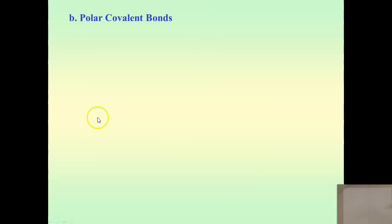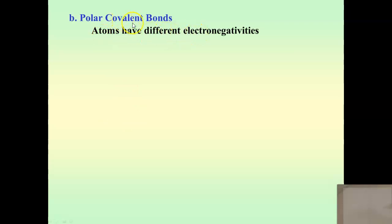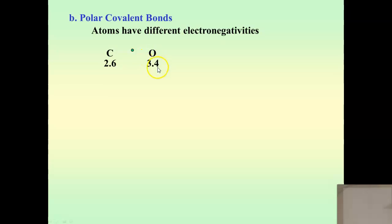Our second type of bond is the polar covalent bond. In a polar covalent bond, we have non-metals with different electronegativities — they're non-metals because they're covalently bonding, but they have slightly different electronegativities. For example, carbon versus oxygen. These two will bond together and share a pair of electrons, but carbon's electronegativity is 2.6, while oxygen's electronegativity is much higher at 3.4. So the electrons are going to be attracted more towards the oxygen than the carbon.